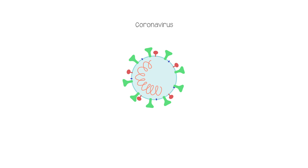Coronaviruses are very small — less than 0.2 micrometres in diameter, which is 0.0002 millimetres. That is, 5,000 of them would fit into 1 millimetre, the smallest division on a ruler.